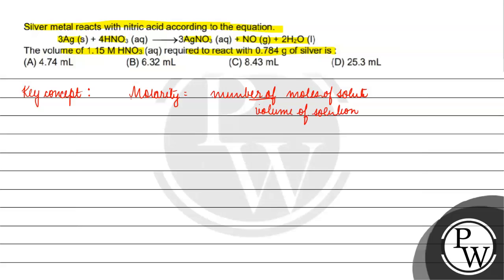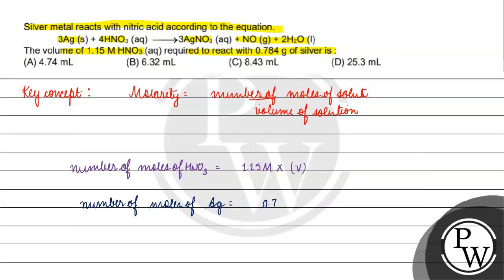If we remove number of moles, what can we do? We multiply the volume by molarity to get moles of solute. Now, how much will we get? The moles of Ag = 0.784 divided by 108 moles.